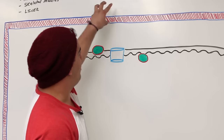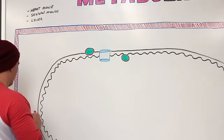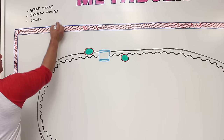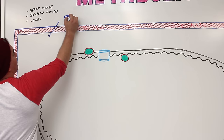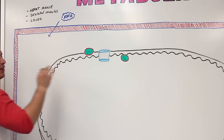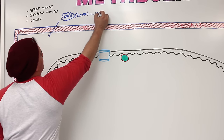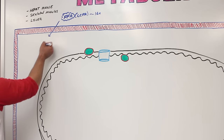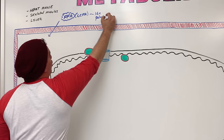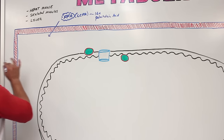Now we've brought the fatty acids into an actual cell. Let's take these free fatty acids and say that they are specifically long chain fatty acids — approximately about 16 carbons long. A specific 16-carbon fatty acid is called palmitoleic acid.